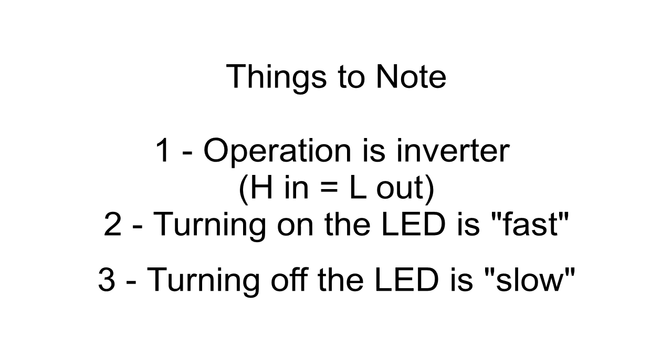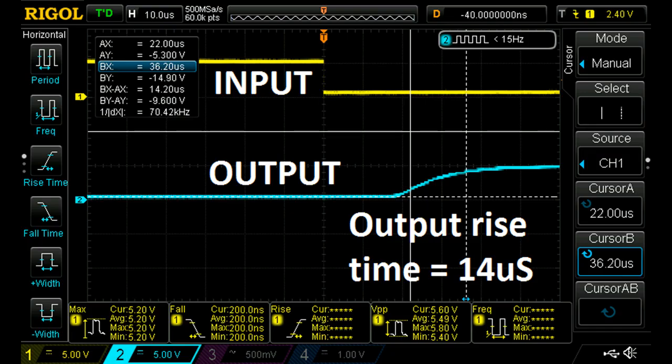A couple of preliminary things worth noting at this point is that the function of the opto coupler is an inverter function. So if you don't want the signal to invert it would require an external inverter. The speeds were also noted here.